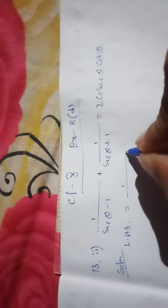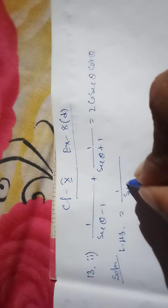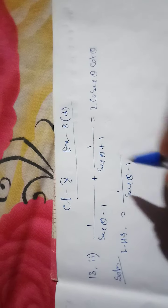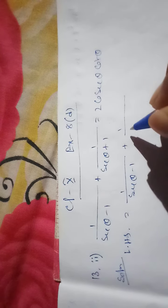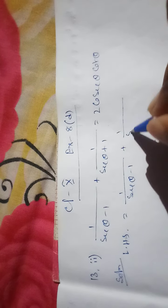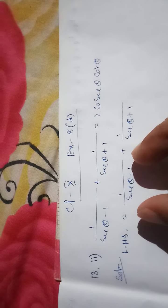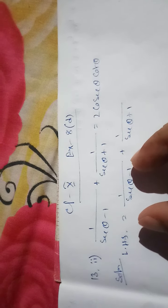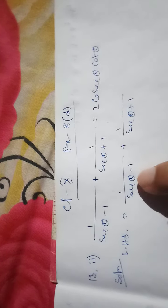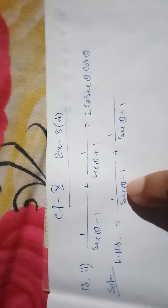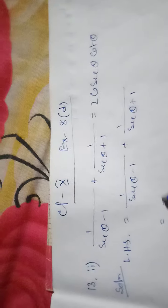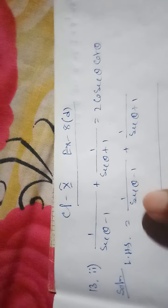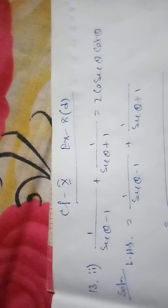Left side: 1/(secθ - 1) + 1/(secθ + 1). We can take the LCM. When we take LCM, the denominator becomes (secθ - 1)(secθ + 1), so these two terms will multiply.